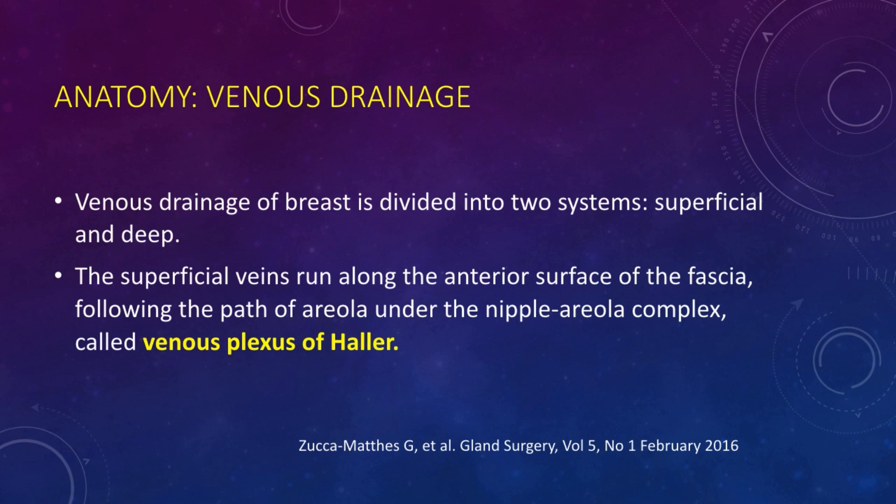The venous drainage of the breast is divided into two systems: the superficial and the deep. The superficial veins run along the anterior surface of the fascia, following the path of the areola under the nipple-areolar complex, and this is called the venous plexus of Haller.